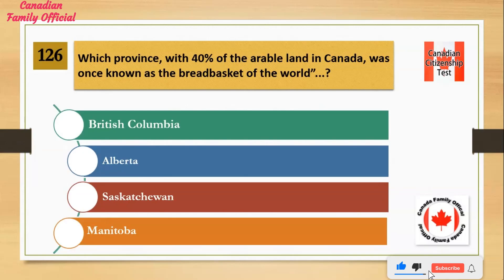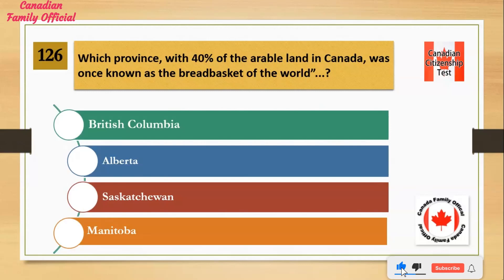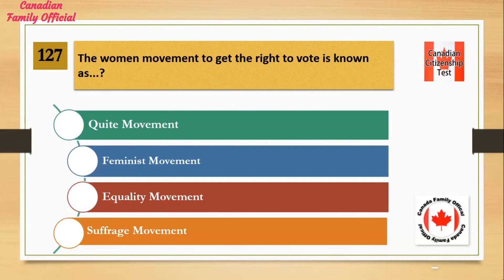Which province, with 40% of the arable land in Canada, was once known as the breadbasket of the world? Number 1: British Columbia. Number 2: Alberta. Number 3: Saskatchewan. Number 4: Manitoba. And the answer is Saskatchewan.